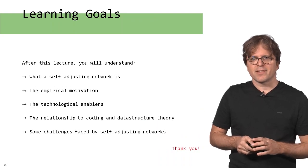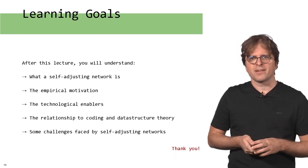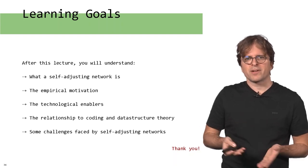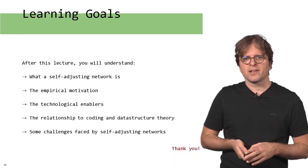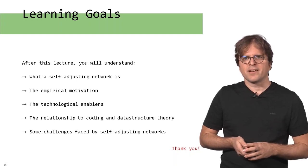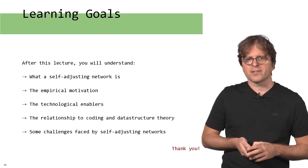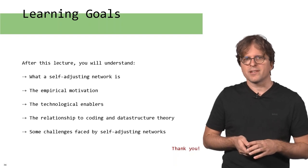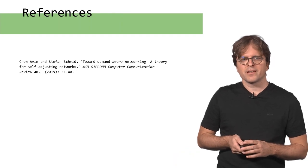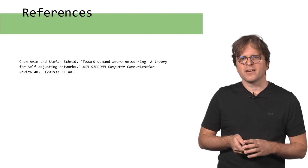So that were our learning goals for today. Hopefully you learned the intuition of what is a self-adjusting network, the empirical motivation, the technological enablers, and the relationship to coding and data structures. In the end we also had some discussions of how this can affect the other layers, and that will be one of the big challenges in this field. There are some references for further reading here on the slides as well. Please do have a look at that.